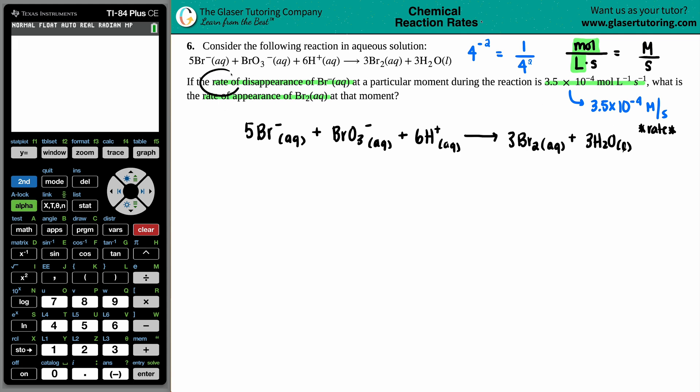So now it kind of makes sense. It's the rate of disappearance. Disappearance just means that the Br minus, the one in question, is going down. And that makes sense because all your reactants should be disappearing because the products are appearing.